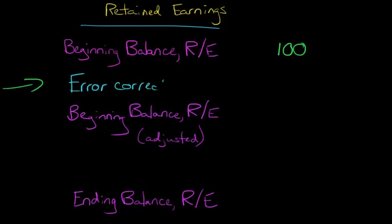Because of that, the accountants have determined that actually retained earnings should be $10 higher. So what we're going to do is add this error correction, and that's going to give us an Adjusted Beginning Balance of $110.